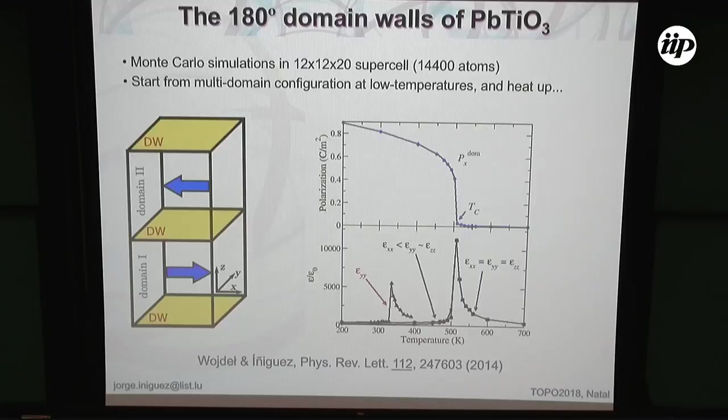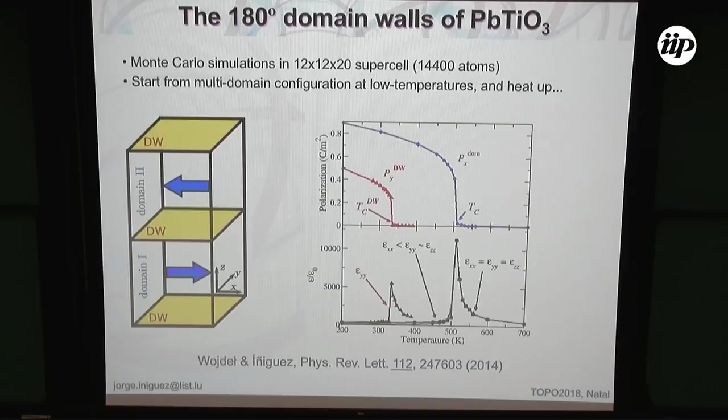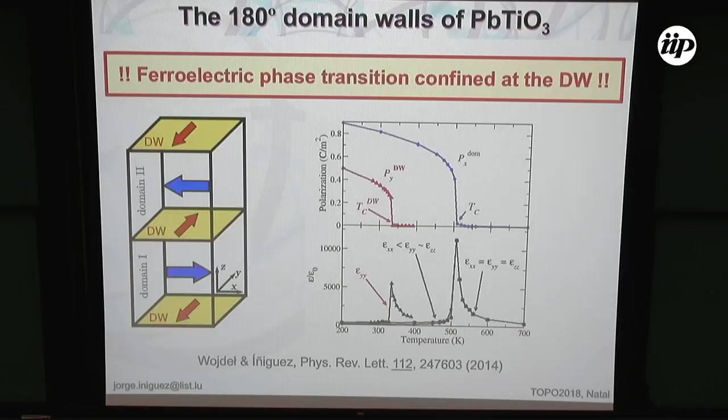This anomaly doesn't relate to the macroscopic polarization in the material — that was very easy to check. But since we had all the information from our simulations, the next challenge was to figure out what this was about. When we started to pay attention to the domain wall, we realized that at that temperature we have the development of a polarization inside the domain wall. Below this second Curie temperature, the domain walls acquire an internal polarization.